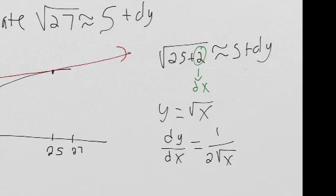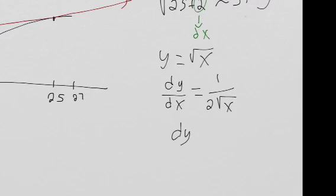So if we know that dx is equal to 2, and then we know that we're plugging in x equals 25, we get 2 root 25.